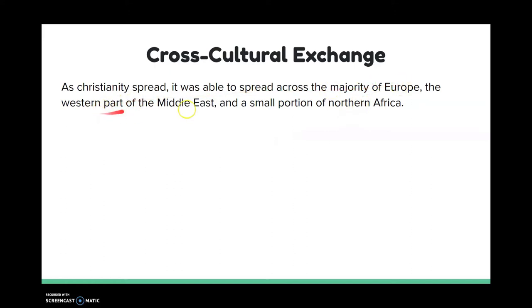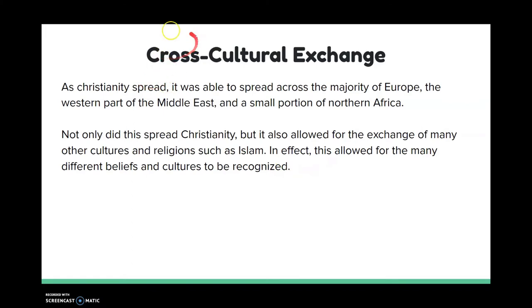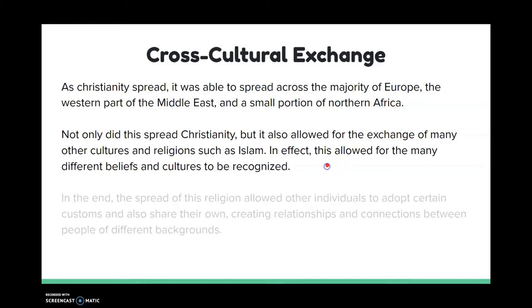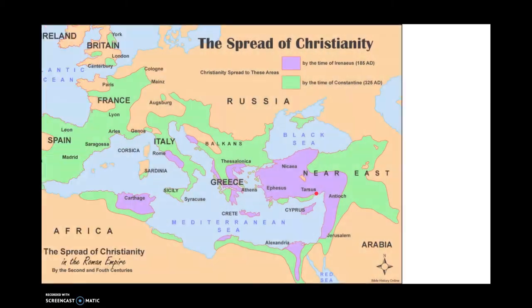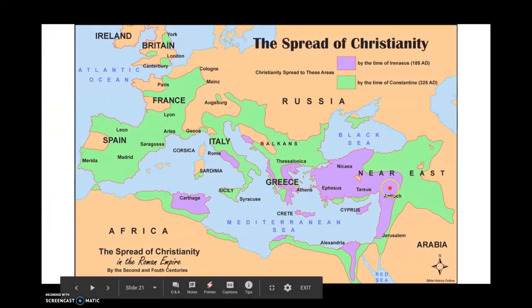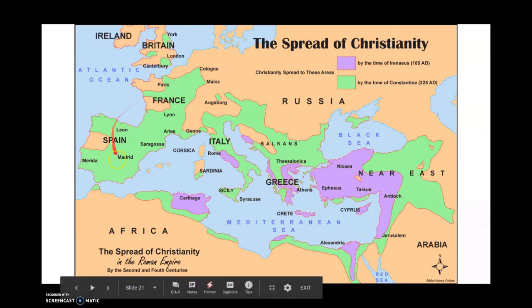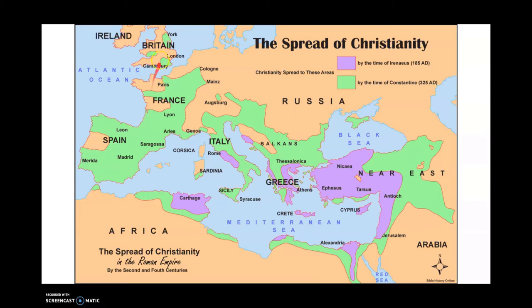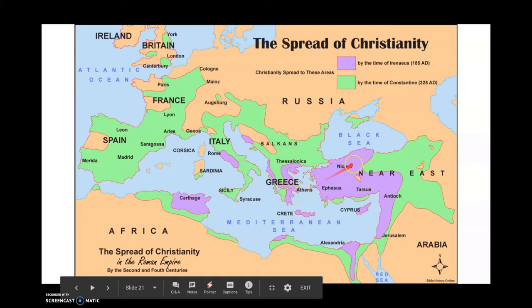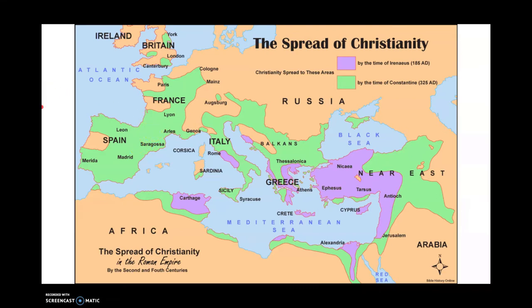Christianity was able to spread across the majority of Europe, the western part of the Middle East, and a small portion of Northern Africa. This is why we see cross-cultural exchange, because it went beyond just Europe. We went from these areas all the way to Spain — from Arabia all the way to Spain, Africa, and a little bit of Britain. We see Christianity in all these parts, and soon it spread to all the Americas. Today in the modern world, we see Christianity in all parts of the world, and this was the beginning of it all.